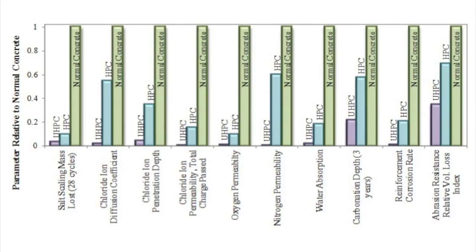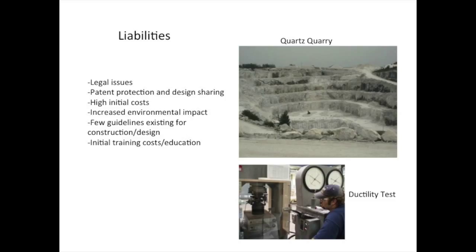These properties allow for many alterations in possible structural designs not possible before with standard concretes. Such applications could lower the amount of overall concrete needed in a project, leading to lower costs for many real-world designs. However, as with any new material, many liabilities may discourage the use of UHPC despite its desirable properties, as this material has had limited testing and actual employment in structural design. Many legal obstacles such as patent restrictions and design sharing may impede its introduction to possible applications. The limited availability of guidelines for UHPC in construction may also impede its expansion, and UHPC has a high initial cost compared to normal concrete, which coupled with training and educational costs may further decrease its desirability.